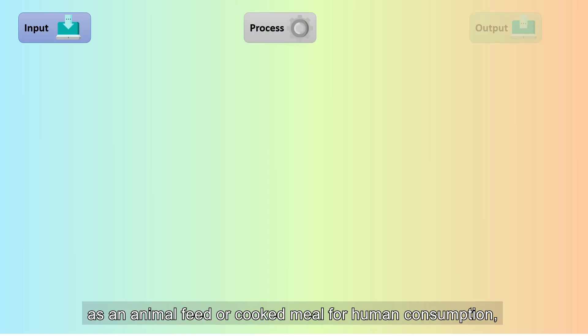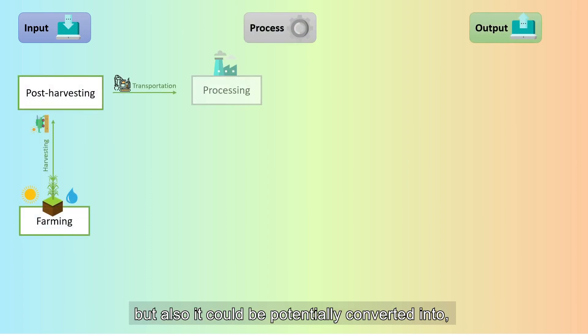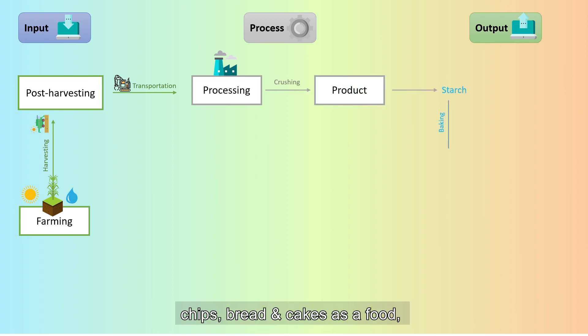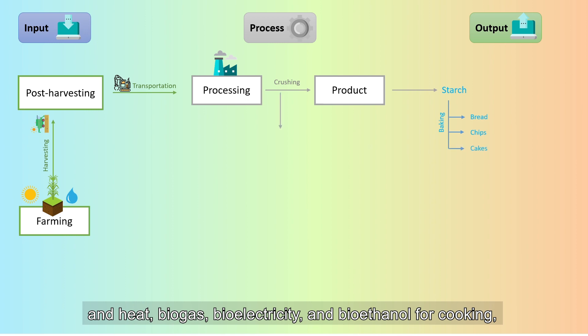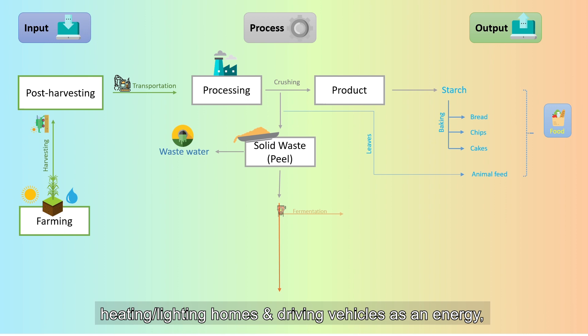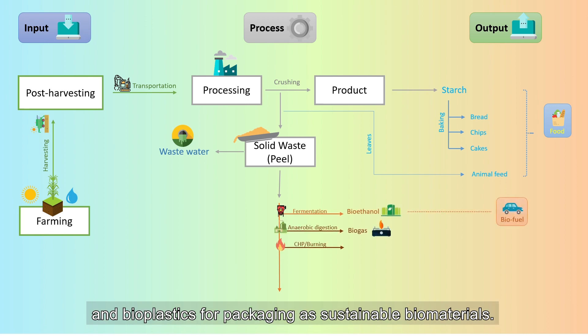In conclusion, cassava is not only used as an animal feed or cooked meal for human consumption, but also it could be potentially converted into chips, bread, and cakes as food, and heat, biogas, bioelectricity, and bioethanol for cooking, heating, lighting, and driving vehicles as energy, and bioplastics for packaging as sustainable biomaterials.